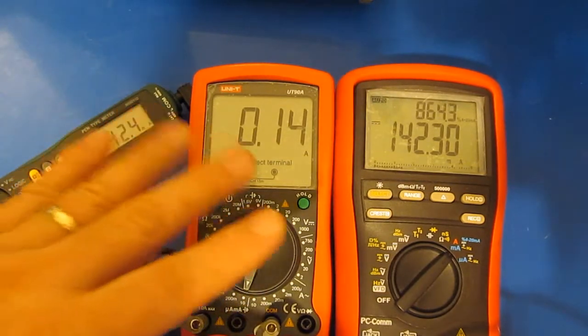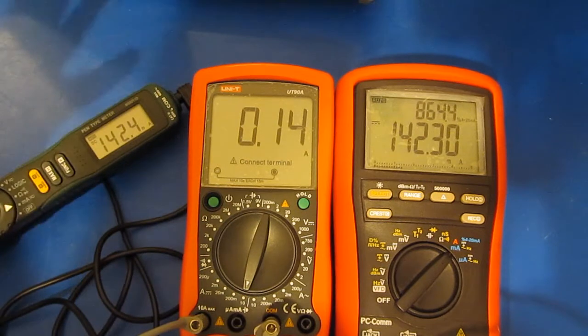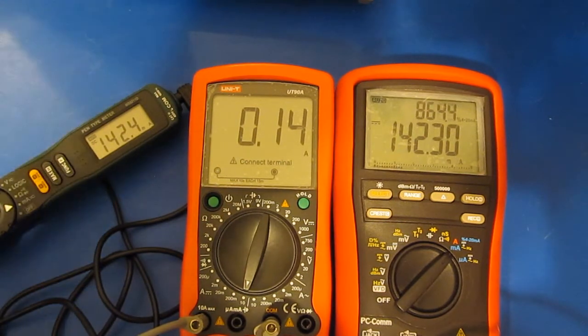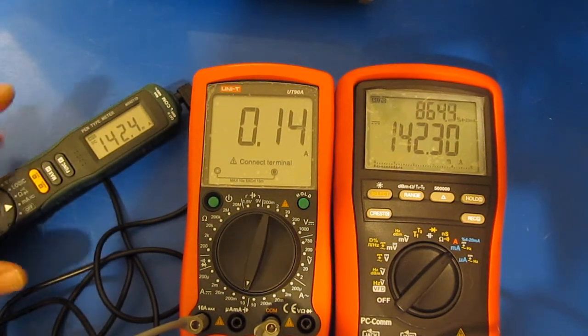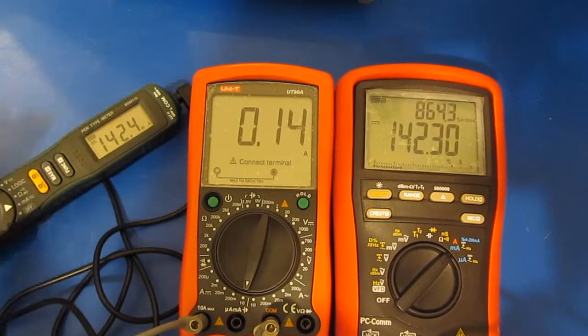But again at least for me typically what I'm doing when I'm measuring current is I'm using a clamp. Or I'm going to be using some type of a shunt. So the burden voltage of the meters really doesn't come into play very often.